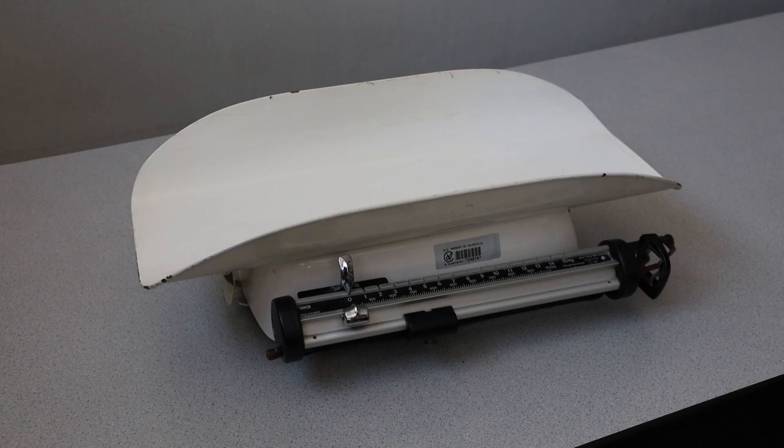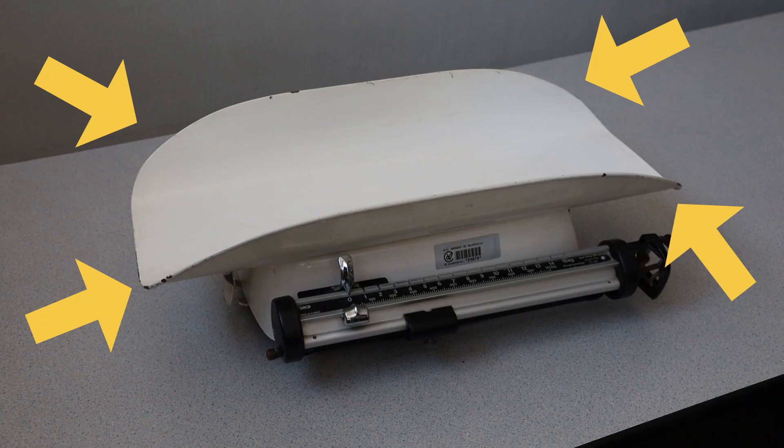The basic parts of an infant scale are the following. The basket used to place the infant in when weighing. The basket is curved or has protection to prevent the infant from falling out of the device and being injured.